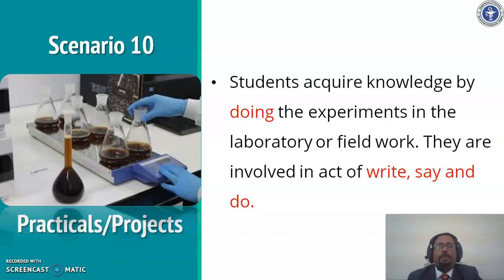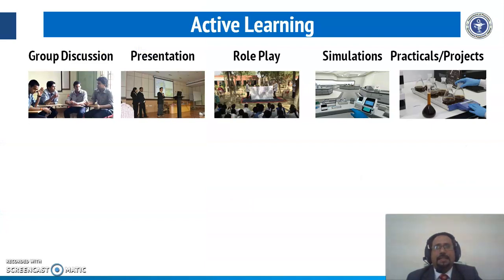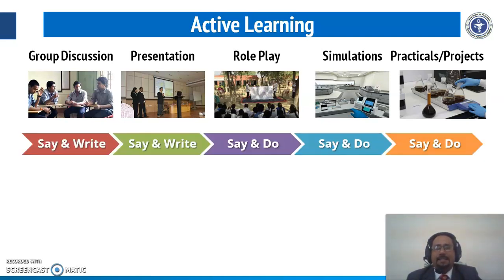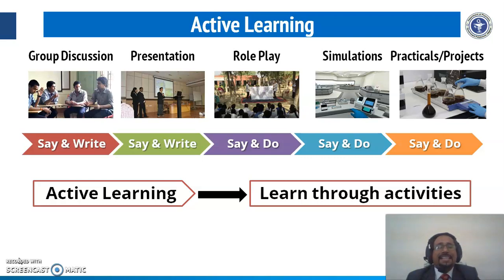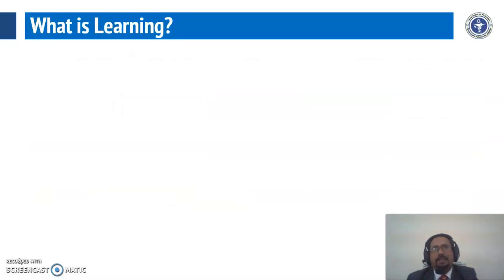If you consider all these activities from group discussions to practicals, you will see that students are involved either in saying, writing or doing. Therefore, in active learning, students are learning through activities and their involvement is maximal. Active learning is the process by which students learn after getting involved in the activity. Having seen the difference, the more basic question is: what is learning?